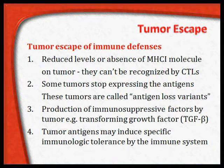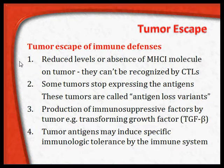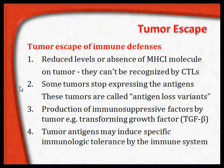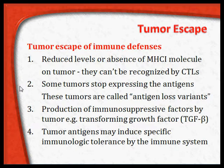How does this escape occur? Tumor escape of immune defenses can occur by several mechanisms. One is reduced levels or absence of major histocompatibility immune molecules on the tumor. Without these immune molecules, cytotoxic T cells cannot recognize the tumor cells as abnormal, and the tumor cells escape destruction. Some tumors, called antigen loss variants, stop expressing antigens on the outer surface and hide them inside the cell, making it impossible for the immune system to identify them as abnormal.